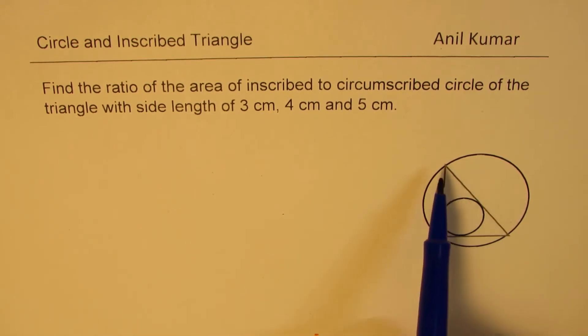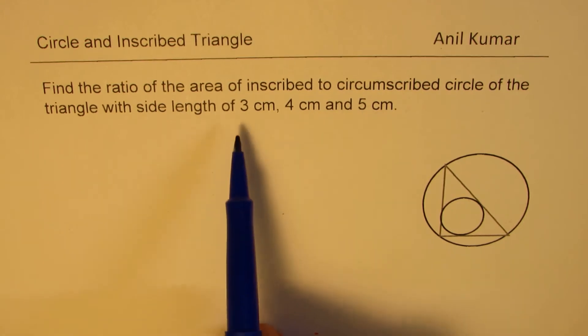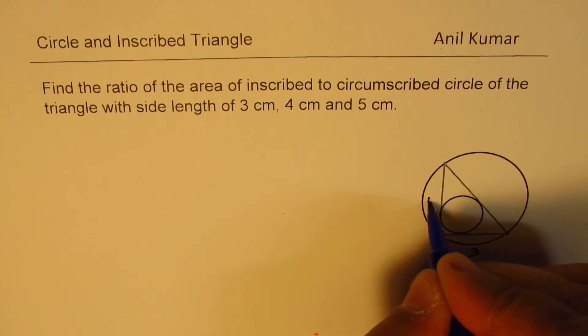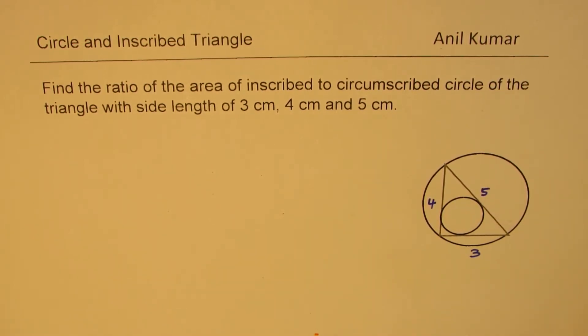So the diagram is given to you, we have a right triangle here with size 3, 4 and 5. You know that is a triple, so let us write this as 3 on this side, 4 on this side and 5 on the other side. Definitely it is not to the scale.